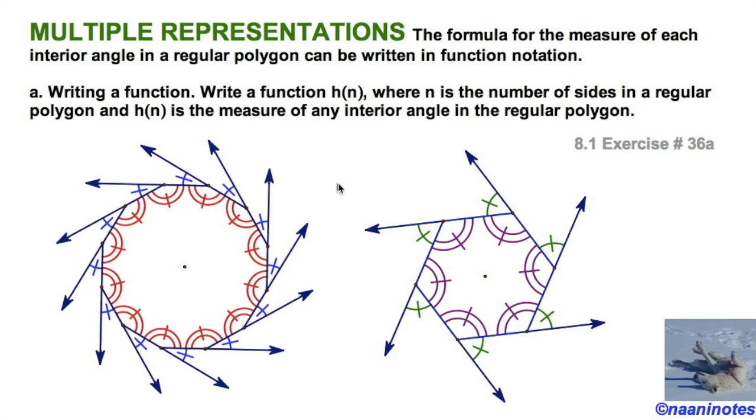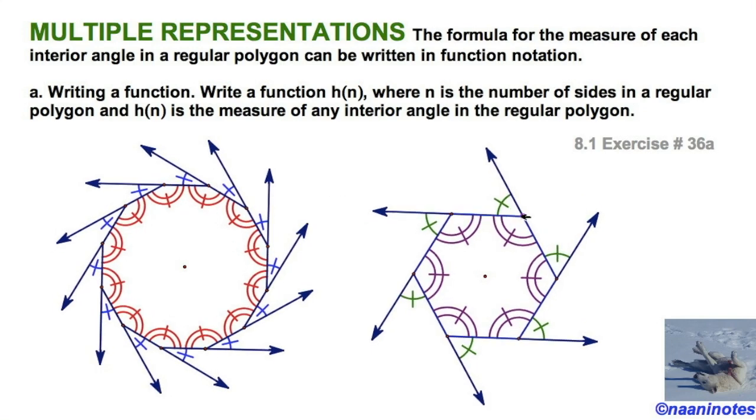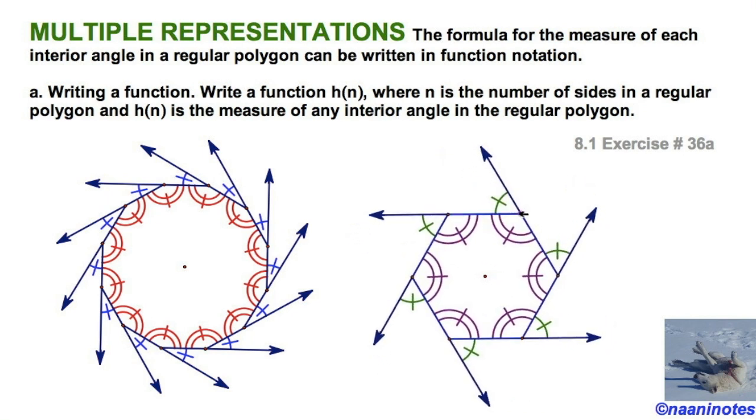Both these are regular polygons. Regular means congruent sides, congruent angles, and that's the interior as well as the exterior. So you can see where we're going with this.